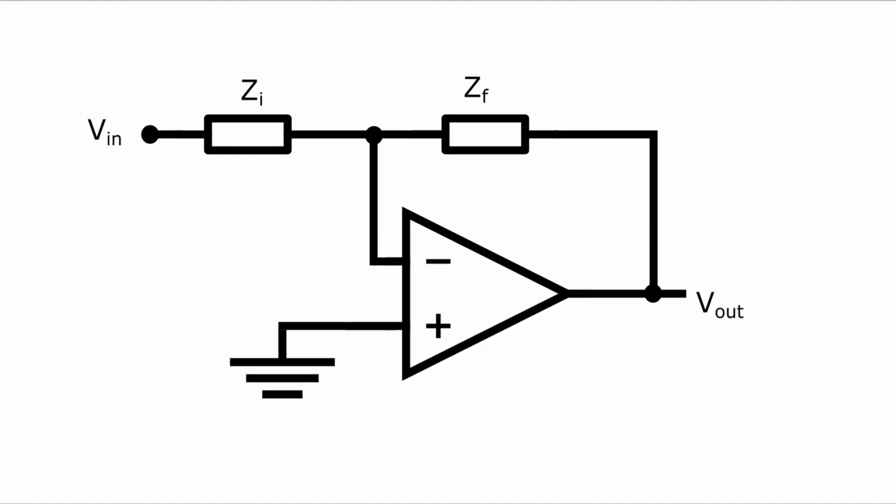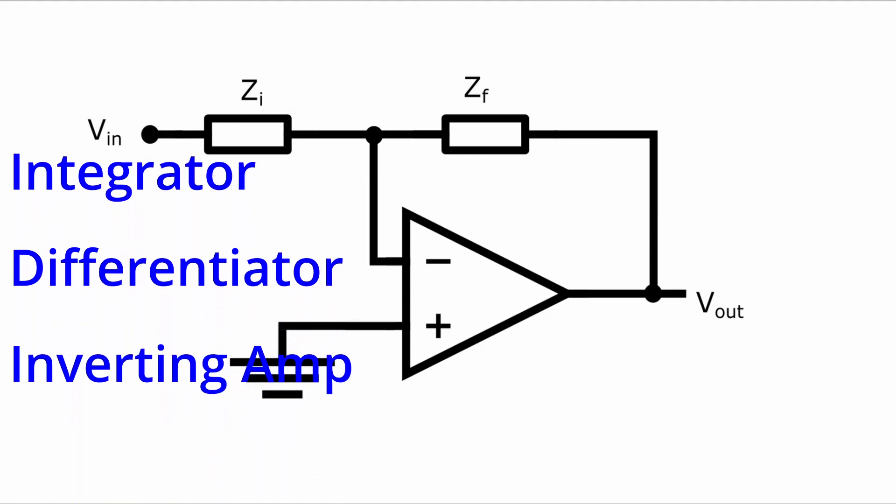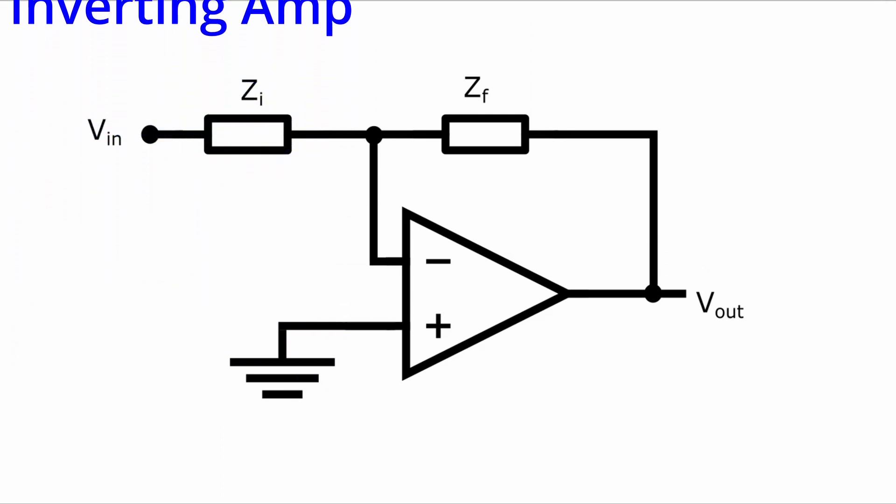I should note that these impedances could also just be resistors and that would make an inverting amplifier. The whole analysis that I'm going to do here can apply to all three of these circuits: integrator, differentiator, and straight inverting amplifier.